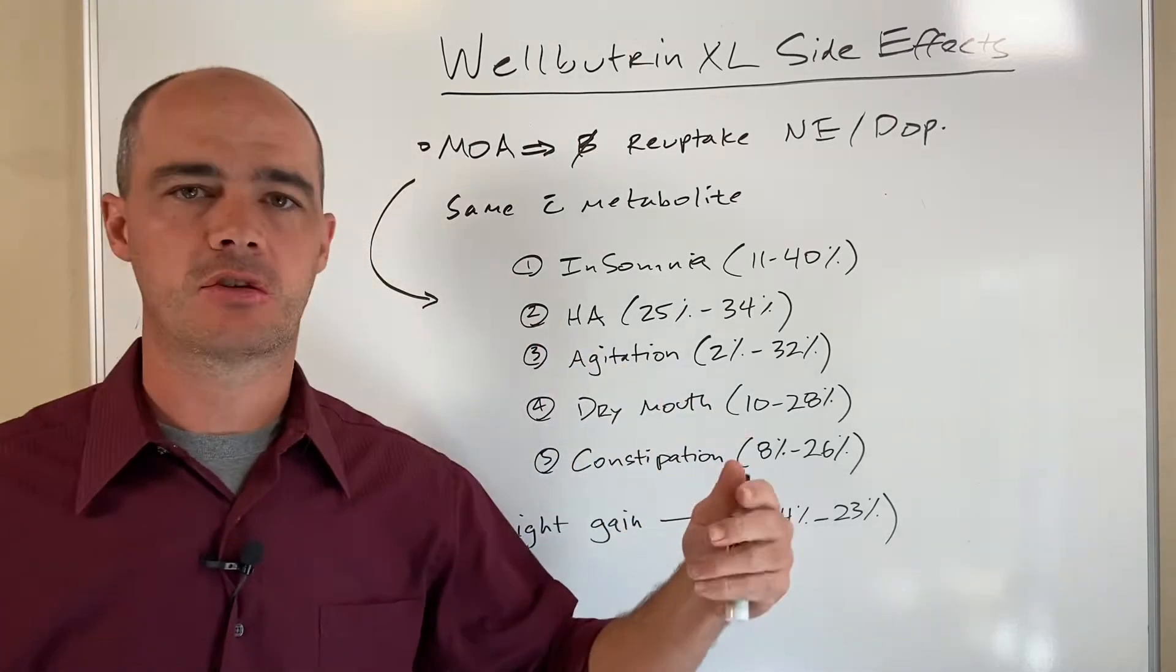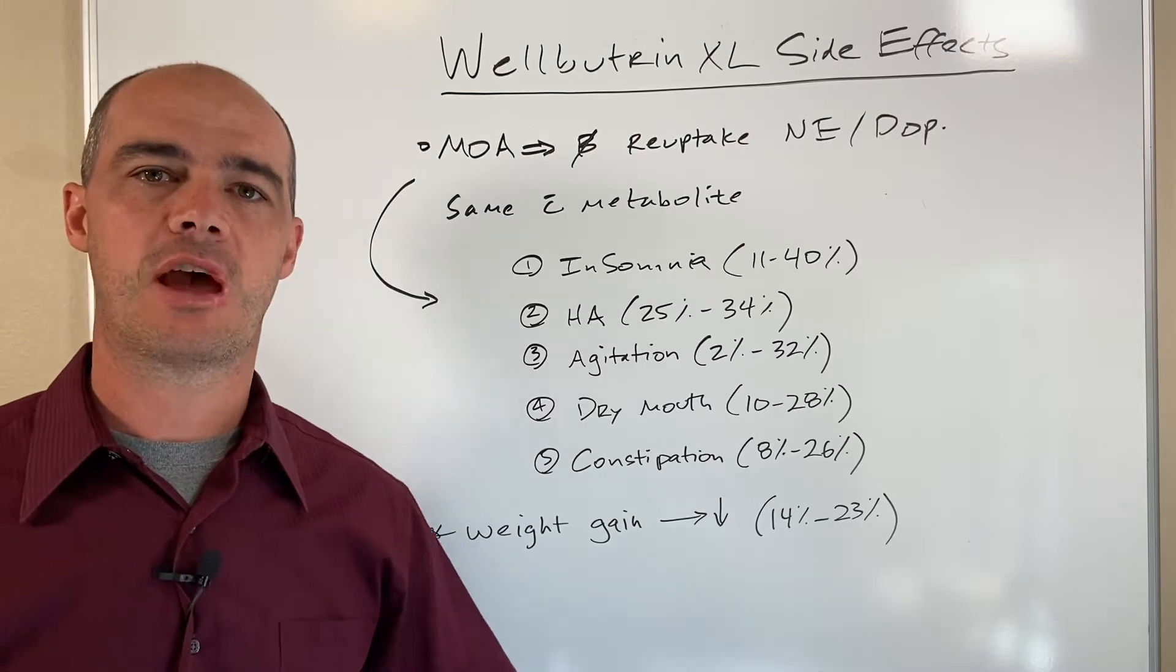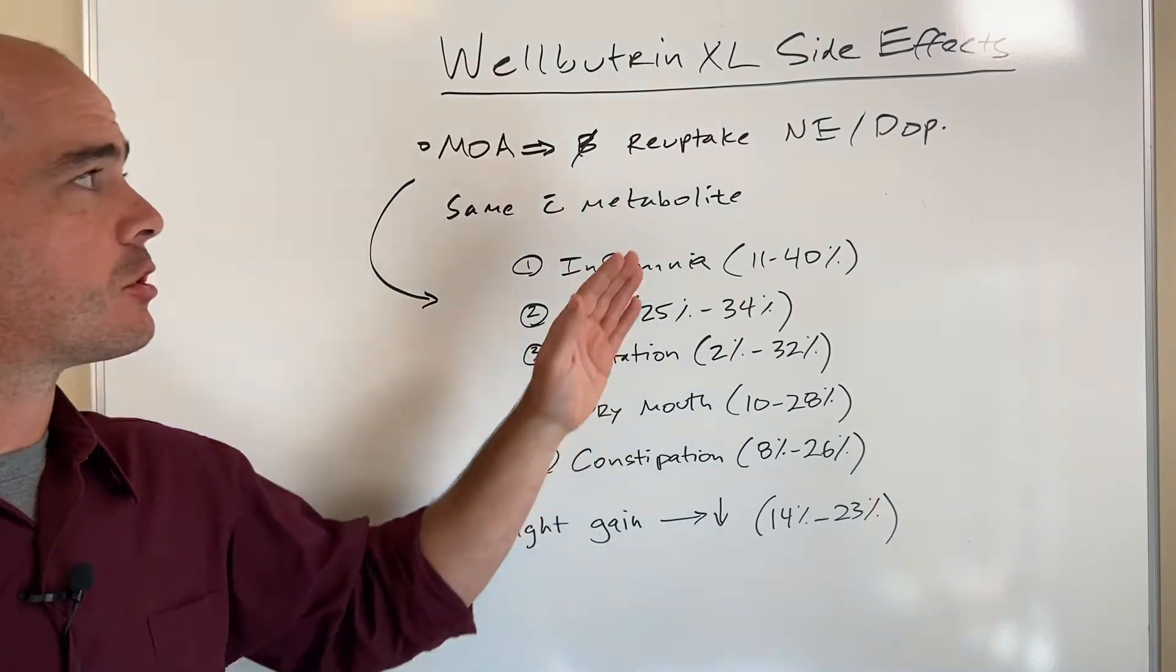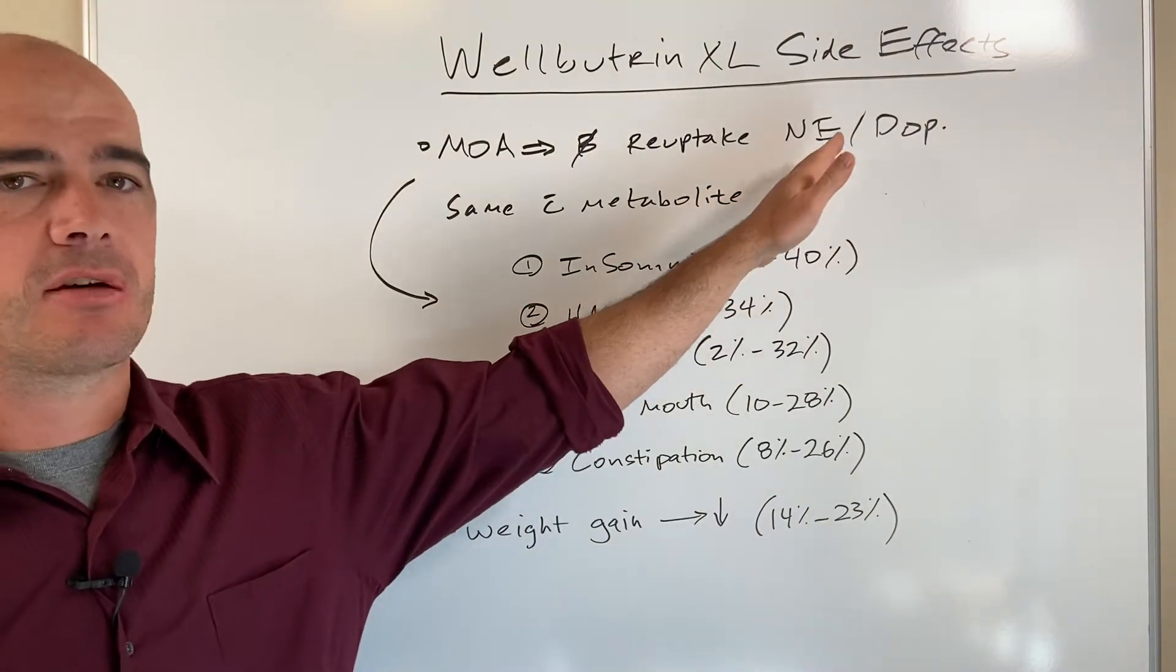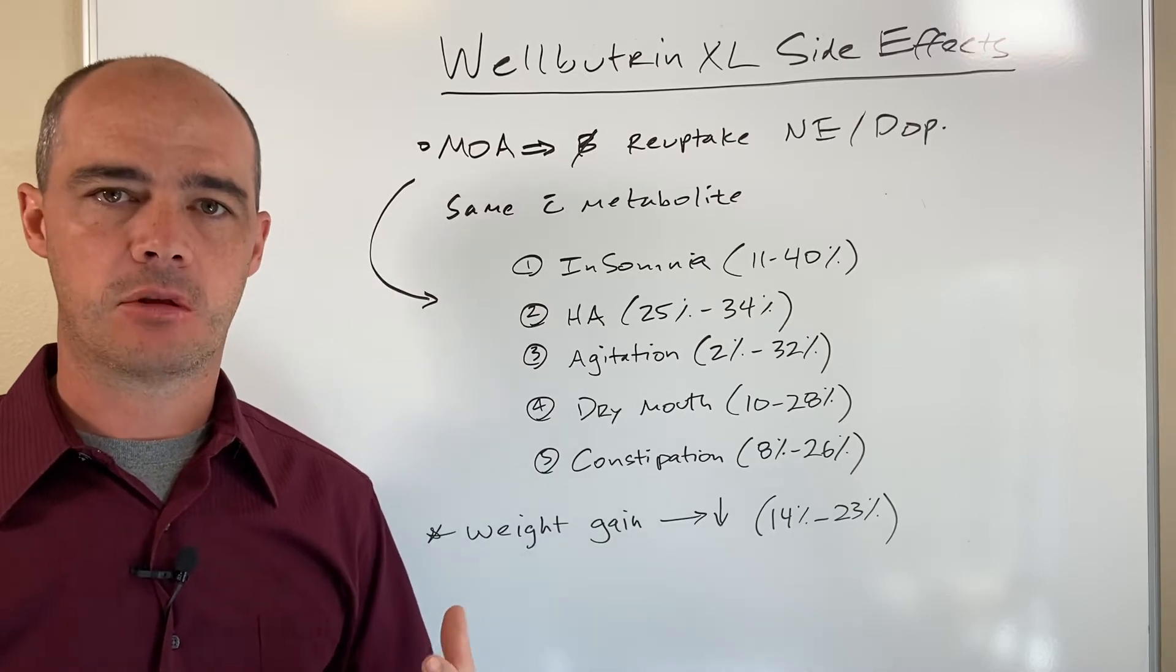Wellbutrin essentially blocks the body from taking it back in, or doing that reuptake process, which means the end result is you're going to have more norepinephrine and dopamine floating around in the blood that can act in the body.